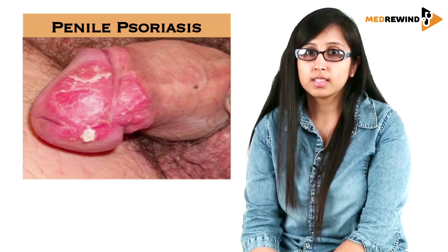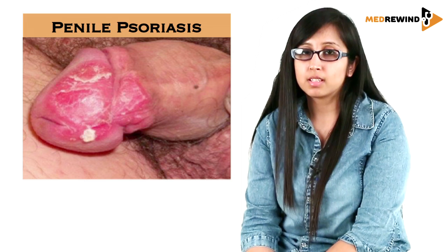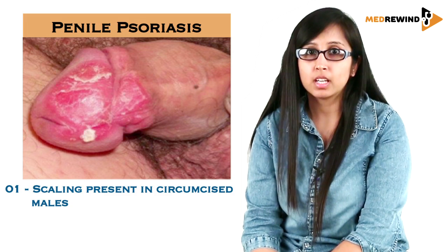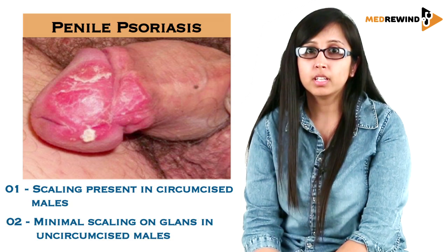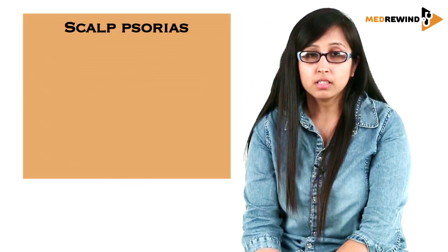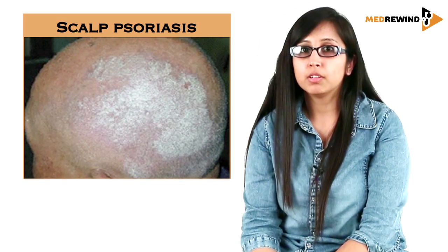The next type is penile psoriasis. We have to remember two things: in circumcised males, scaling is present, but in uncircumcised males, the scaling is absent.